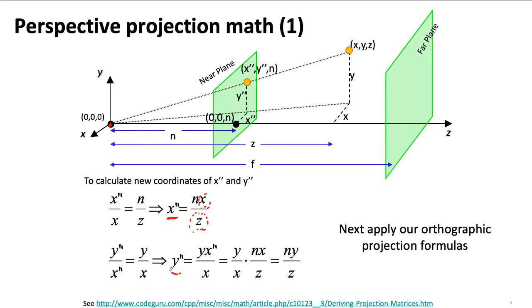Or you could just kind of do this logic directly and get this expression for Y double prime in terms of NY divided by Z, just as we had up here for X double prime.